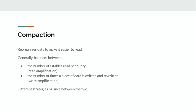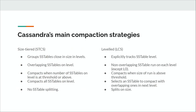Different compaction strategies use different ways to balance between read amplification and write amplification. In Cassandra, the two main general-purpose compaction strategies are Size-Tiered Compaction Strategy (STCS) and Leveled Compaction Strategy (LCS), and they are very different from each other.